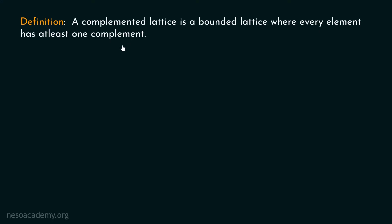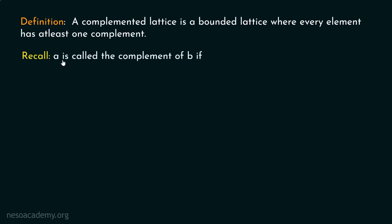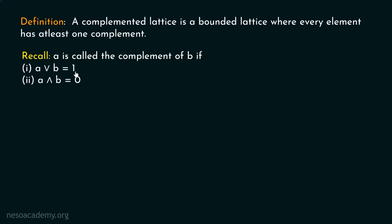Recall the definition of complement: A is called the complement of B if A or B is equal to 1, and A and B is equal to 0. The meaning of A or B equal to 1 is that the least upper bound of A and B must be equal to the greatest element.